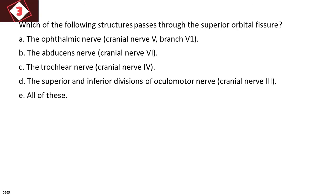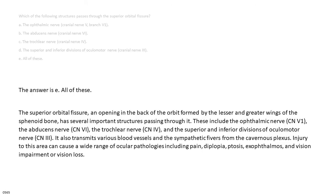The answer is E, all of these. The superior orbital fissure, an opening in the back of the orbit formed by the lesser and greater wings of the sphenoid bone, has several important structures passing through it. These include the ophthalmic nerve CN5V1, the abducens nerve CN6, the trochlear nerve CN4, and the superior and inferior divisions of oculomotor nerve CN3. It also transmits various blood vessels and the sympathetic fibers from the cavernous plexus. Injury to this area can cause a wide range of ocular pathologies including pain, diplopia, ptosis, exophthalmos, and vision impairment or vision loss.